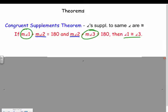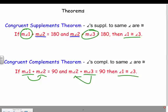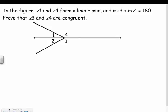We have the same thing for complements, but adding up to 90 instead. If angle one plus angle two equals 90, and angle three plus angle two equals 90, then angle one is congruent to angle three. That's the congruent complements theorem and it should make sense. Let's try a proof.